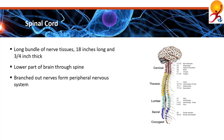Both the brain and the spinal cord are protected by bone. The brain is protected by the skull, and the spinal cord is protected by a set of ring-shaped bones called vertebrae. They are both cushioned by layers of membranes called meninges and a special fluid called cerebrospinal fluid.